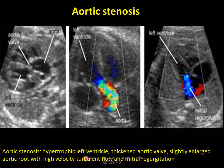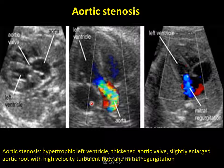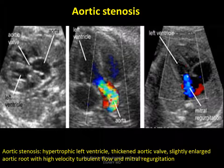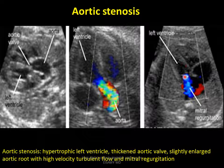We see either hypertrophic or dilated left ventricle in aortic stenosis. In hypertrophic left ventricle, the aortic valve is thickened. This is the left ventricle — hypertrophic with a thickened aortic valve. Slightly enlarged aortic root with high velocity turbulent flow and mitral regurgitation. As seen in the five-chamber view, slightly enlarged aortic root with high velocity turbulent flow, seen using color Doppler, and mitral regurgitation. The left ventricle and left atrium show regurgitation of the mitral valve.